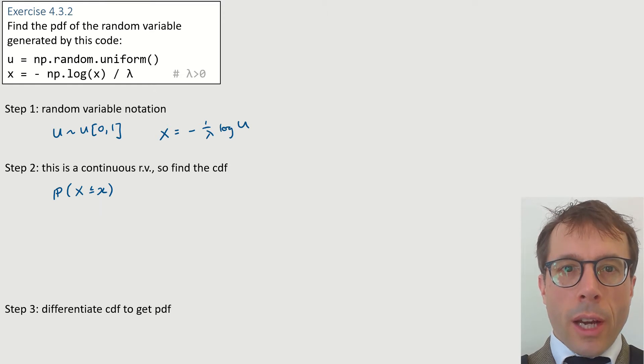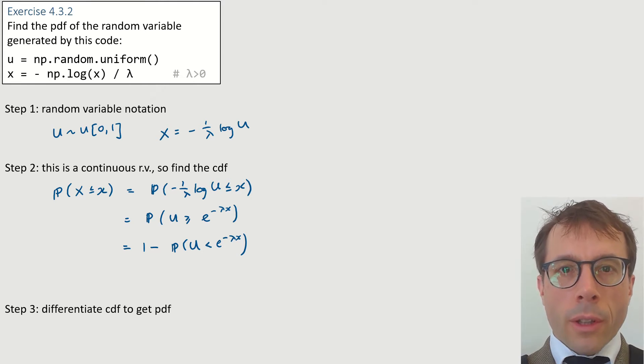Next, we want the CDF. My strategy here is to rewrite this probability in terms of simple standard random variables, in this case u, and then to try to use the CDF for u. Here, I've rewritten in terms of u, and now I've rearranged so that u appears on the left-hand side inside the probability. I know that I can just look up the CDF for u, so I'm trying to get my formula to look like probability that u is less than something.